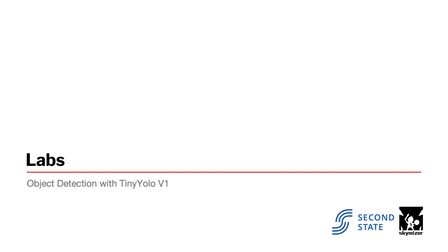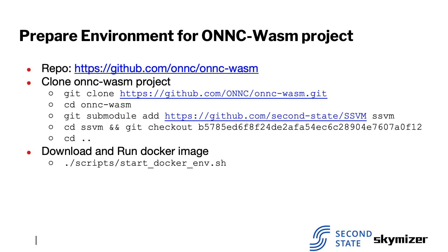I'd like to demonstrate how to build and run an AI model using the Onyx Watson project. We use the TinyYOLO V1 model to show object detection on a photo. We all know it is difficult to set up the working environment, but you don't need to prepare it by yourself. We provide an Onyx Watson Docker image. All you need to do is to clone our Onyx Watson repository, set up the SSVM sub-module, and check out to the right commit hash. Then run the built-in script to download and run the Onyx Watson environment. You will have a working environment ready for this project easily.